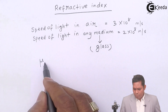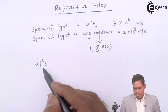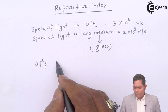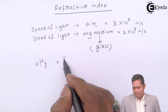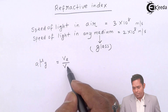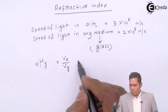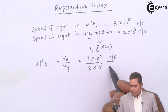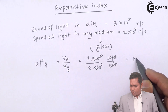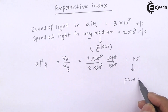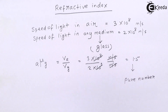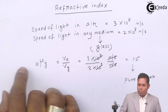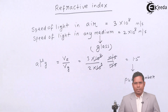Refractive index of glass with respect to air is the speed of light in air divided by the speed of light in the medium, that is glass. Putting in the values: 3 × 10⁸ divided by 2 × 10⁸. The units cancel out, giving us 1.5. This is a pure number.